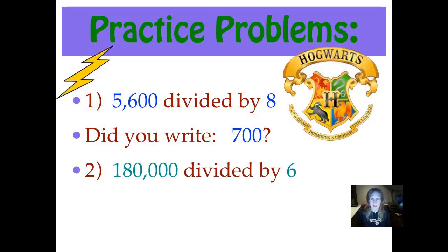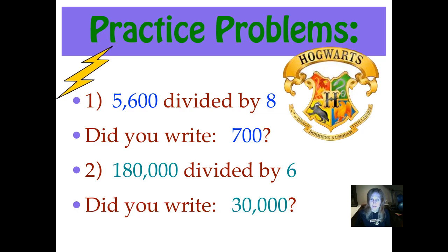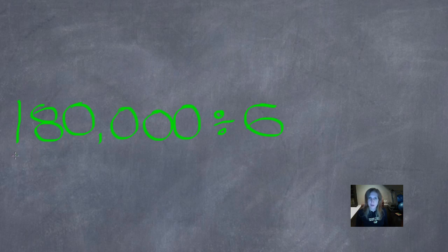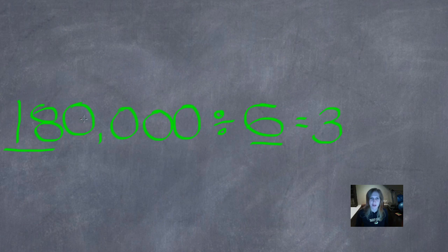180,000 divided by 6. Push pause, do your work, and then push play when you're ready. Did you write 30,000? First, we underline our non-zero digits. That makes for an easy division problem: 18 divided by 6, which is 3, because 3 times 6 is 18. Now we count all those zeros — 1, 2, 3, 4 — and add them after our 3. Then put our comma in the correct place: 30,000.